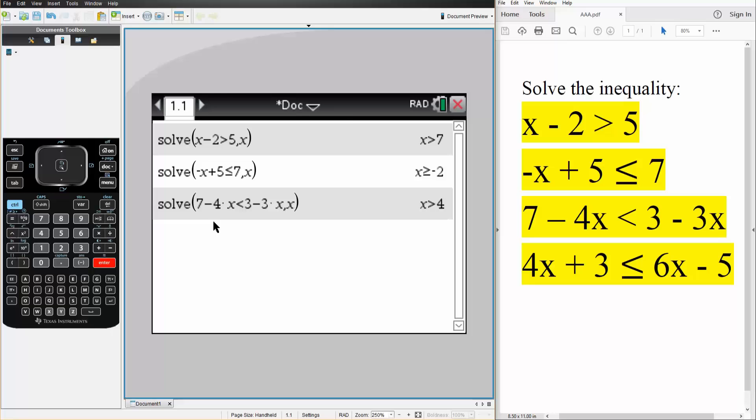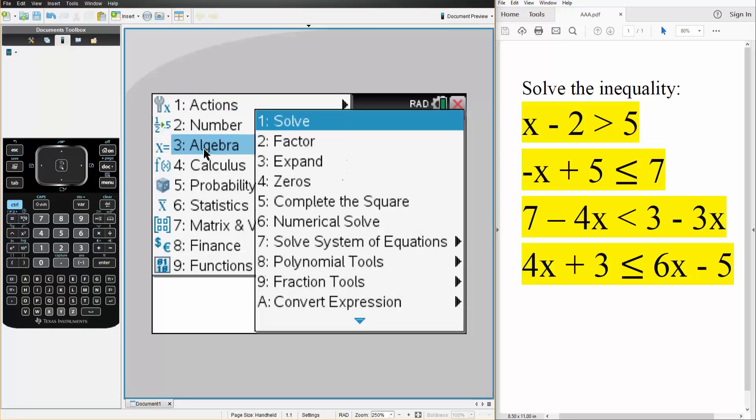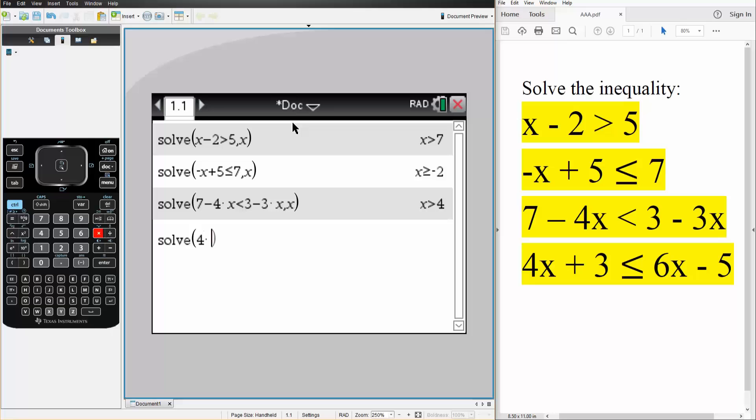The last problem. The exact same thing. Menu, algebra, solve. And we have 4 times x plus 3 is less than or equal to. So ctrl, equal. And then we do less than or equal to. And we have 6 times x minus 5, comma x, like this. We hit enter. And the answer is x is greater than or equal to 4. And that's how we can solve inequalities.